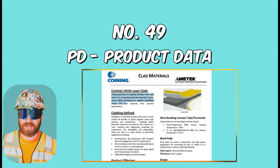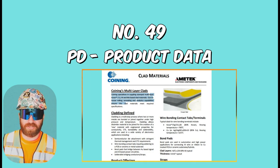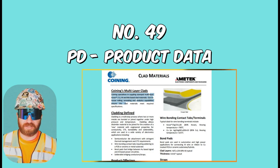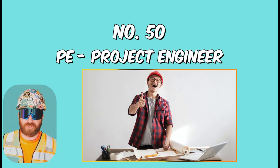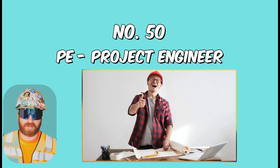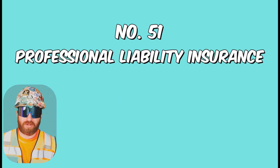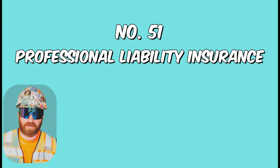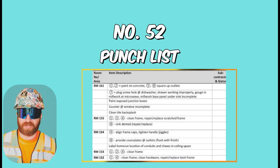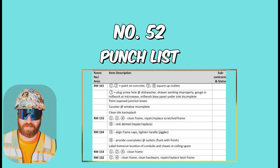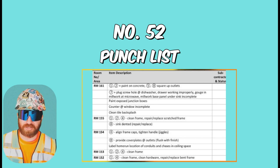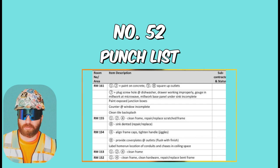PD just stands for product data — it's a type of submittal which is essentially the description of the material the construction team intends to use, reviewed during the submittal process to ensure it conforms with the project specifications. Project Engineer is usually a designation of an individual on the construction or design team, but not yet at the project management experience level. Professional Liability Insurance covers architects and engineers from negligence when producing construction documents, and is also highly recommended if you're completing delegated design as a contractor. Punch List is a checks-and-balance approach for the owner — the architect completes a punch list at the end of a project identifying items that do not meet the standards of the specifications, and it is the contractor's responsibility to correct those items.